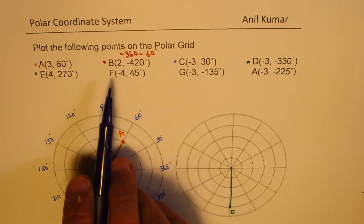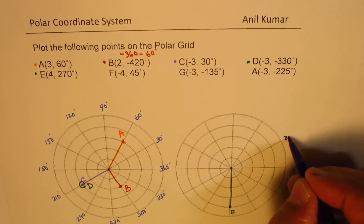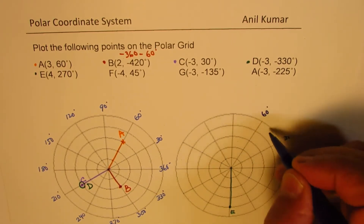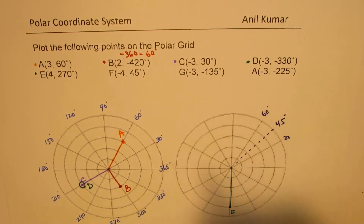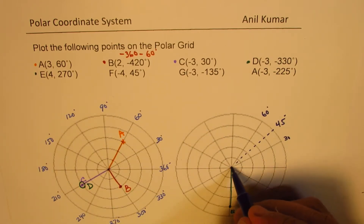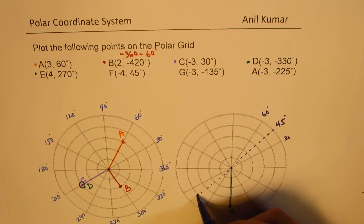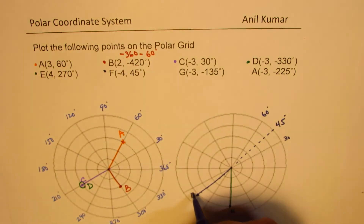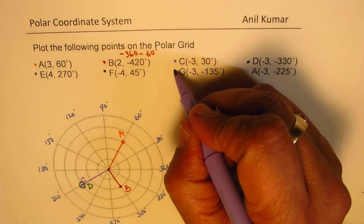Point F is (-4, 45°). We've taken 30 degrees here and 60 degrees here, so 45 degrees is somewhere in between — right there. Since r is minus 4, we go in the opposite direction: 1, 2, 3, 4 units. That will be point F.